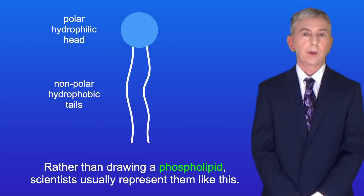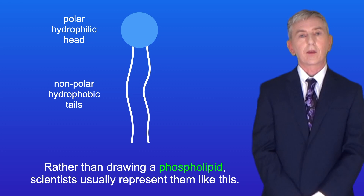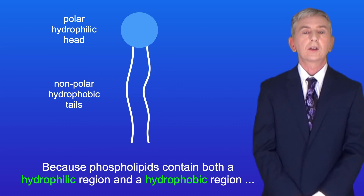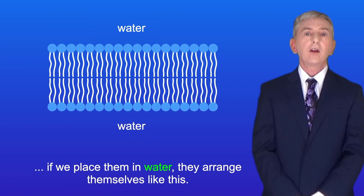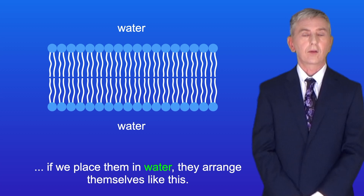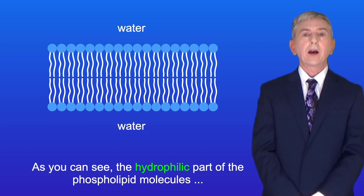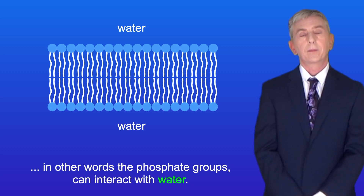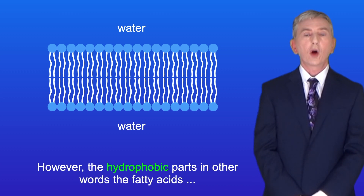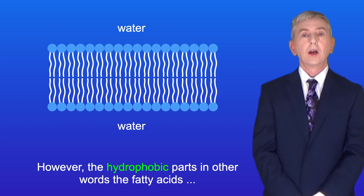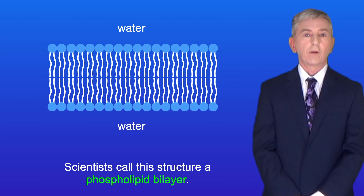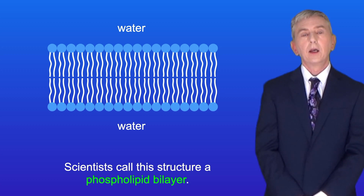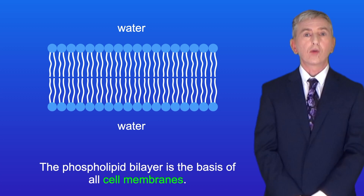Rather than drawing a phospholipid, scientists usually represent them with a simplified symbol. Because phospholipids contain both a hydrophilic region and a hydrophobic region, if we place them in water they arrange themselves into a bilayer. The hydrophilic part — the phosphate groups — can interact with the water, while the hydrophobic parts — the fatty acids — are buried in the centre away from the water. Scientists call this structure a phospholipid bilayer.